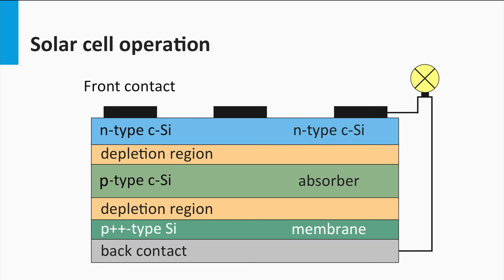The photovoltaic process is based on three important principles. The first is excitation of free mobile charge carriers due to light absorption. The second is separation of the charge carriers. And the third one is collection of the charge carriers at the contacts.